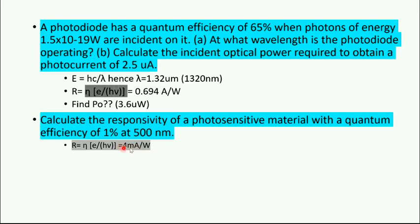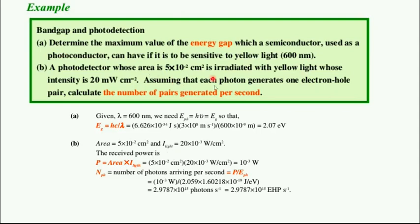Always the unit is amperes per watt. Try it out; if you have any doubts please contact me. Bandgap and photodetection - I haven't seen previous questions about this type. Determine the maximum value of energy gap which a semiconductor used as photoconductor can have if it is sensitive to yellow light at 600 nanometers. A photodetector whose area is given, using yellow light with given intensity, assuming each photon generates an electron-hole pair, calculate the number of pairs per second.